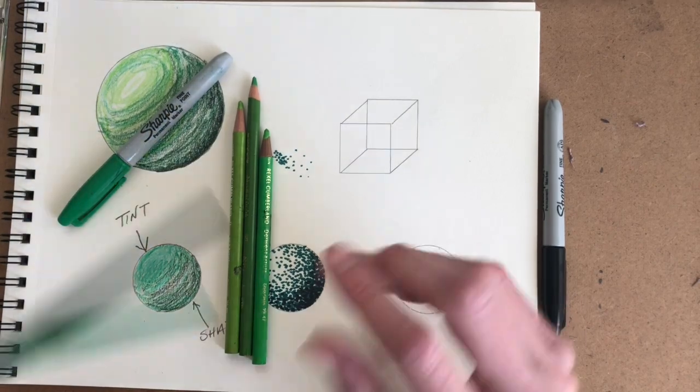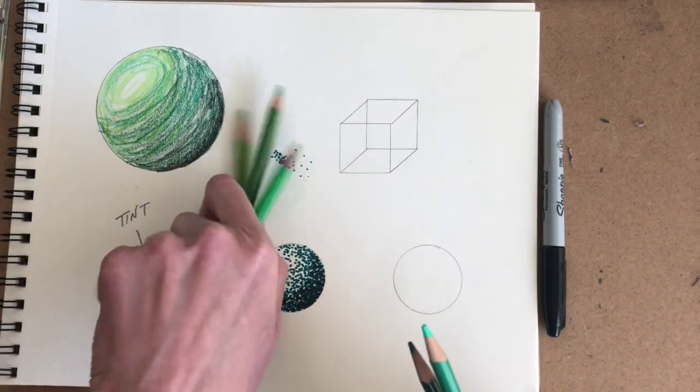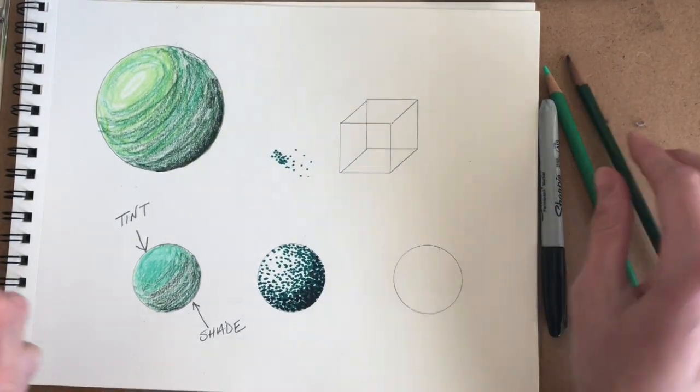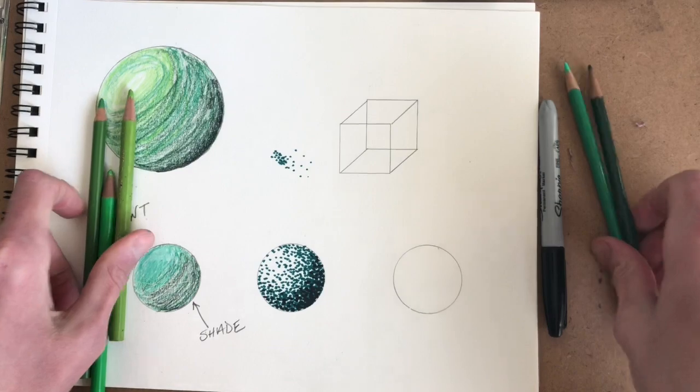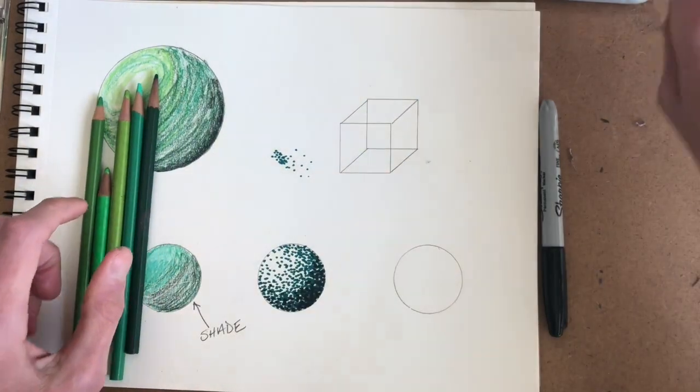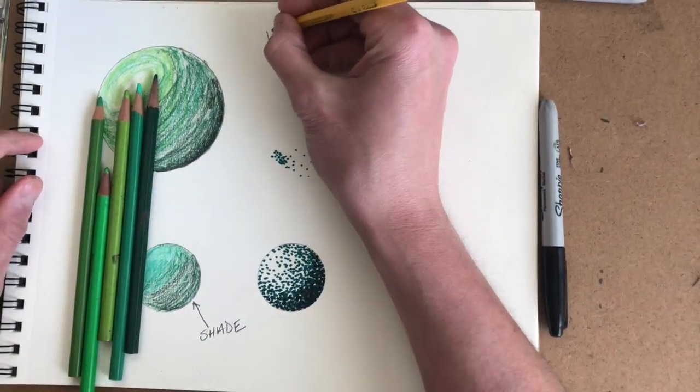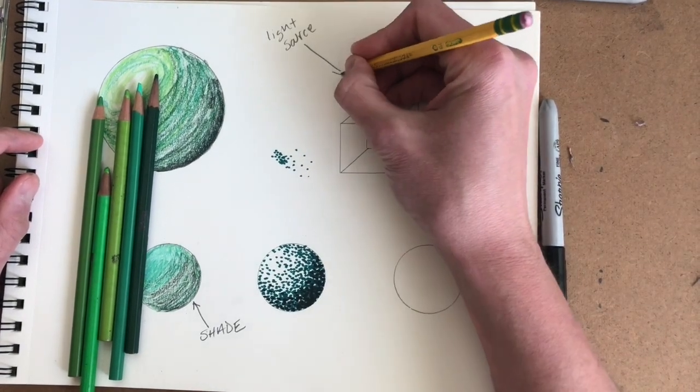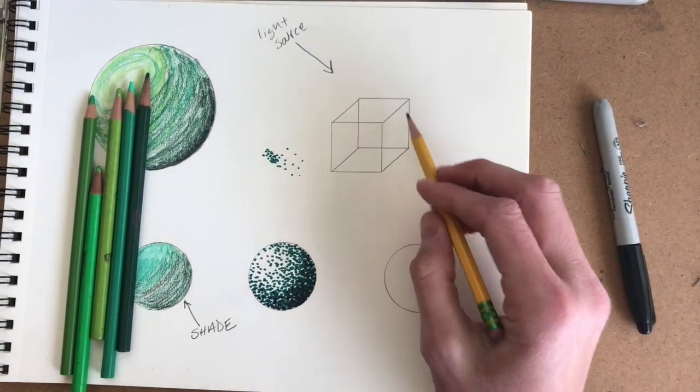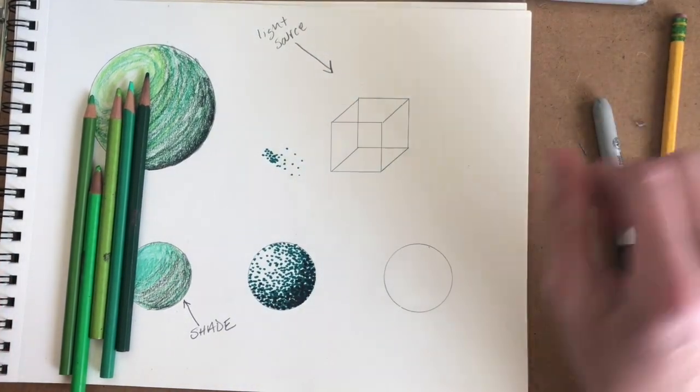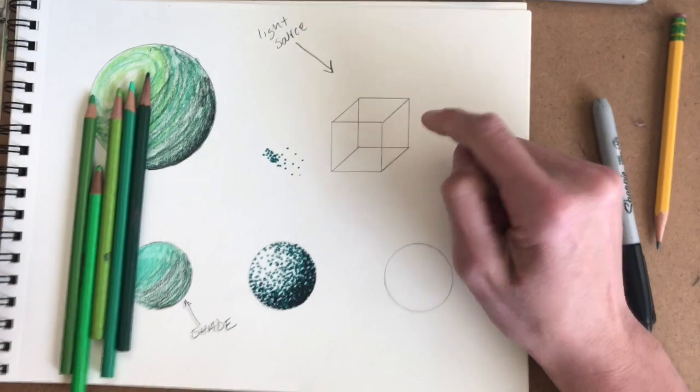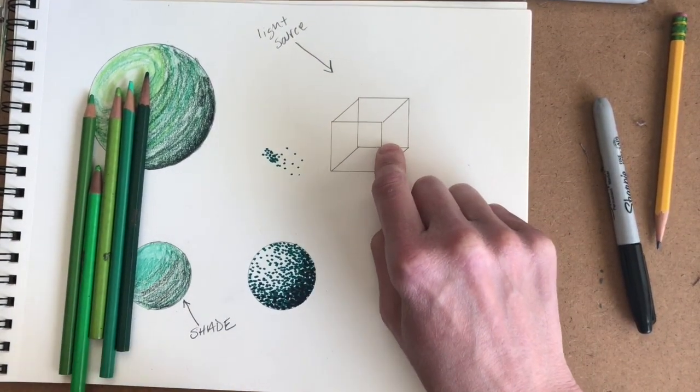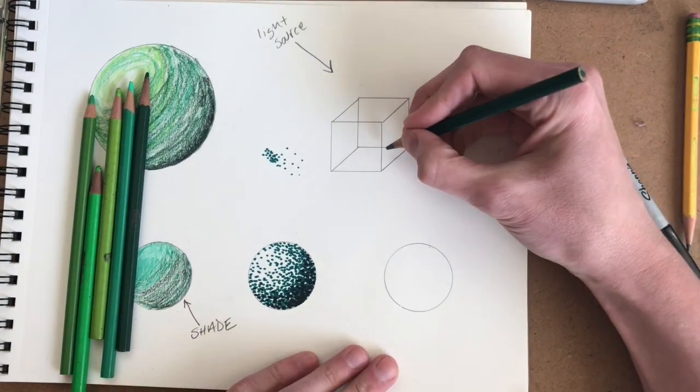Now if you do have a variety of different color pencils and different types of green, I'll show you how you can shade a cube. Now a cube does not have a round surface, it's made up of flat planes that are each being lit in a different way. We're gonna still imagine our light source coming from the same direction.